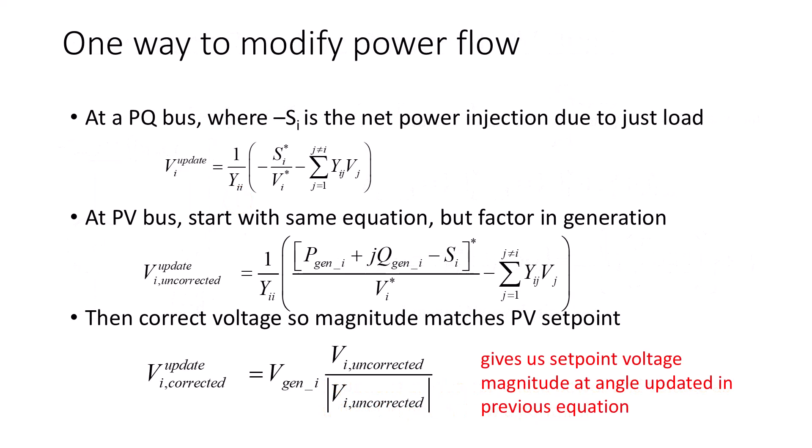In the three bus power flow example, when we just had to find voltages at constant power PQ buses, we updated the voltage using the formula shown here. The bus net current injection is estimated by taking minus S conjugate divided by V conjugate, where S is the load power and V is the last estimate of the bus voltage. At a PV bus, we use a similar update formula.